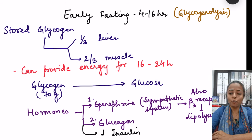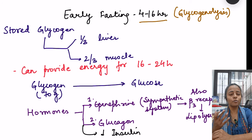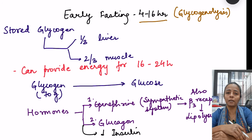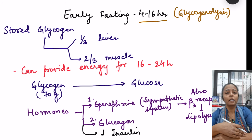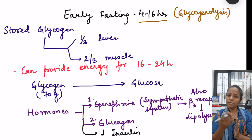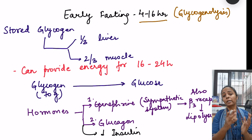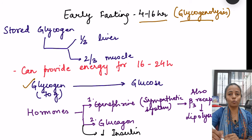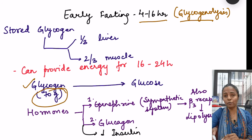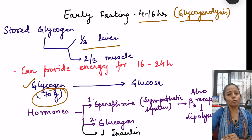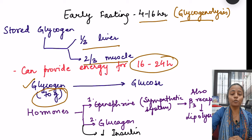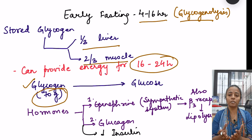The first phase of fasting is early fasting, from 4 to 16 hours. In the post-absorptive phase glucose was available, but now in early fasting, glycogen breakdown starts. When excess glucose is eaten, it is stored as glycogen, and when blood glucose is not available, glycogen is broken down back to glucose — this is glycogenolysis. There is approximately 70 grams of glycogen stored in our body: one-third in the liver and two-thirds in muscle, providing energy for approximately 16 to 24 hours.